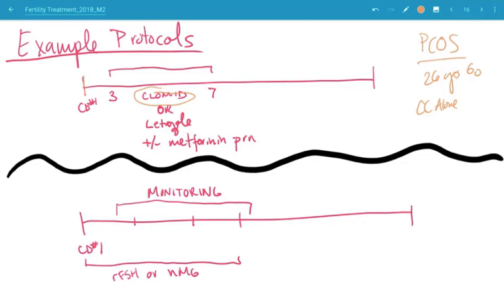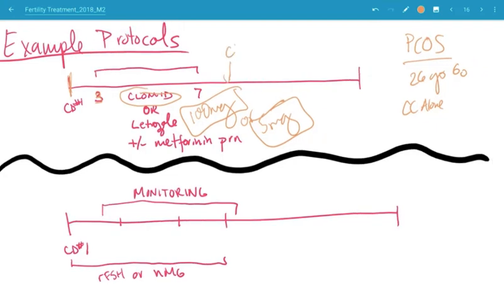You're going to have the patient call with cycle day one. She gets the prescription and starts her Clomid on cycle day three. I usually start with 100 milligrams of Clomid or 5 milligrams of Letrozole. She takes it every day, cycle days three through seven. Then starting on cycle day 10, she starts using an ovulation prediction kit. When the kit turns positive, she has intercourse that day and the day after, cycle days 11 and 12.